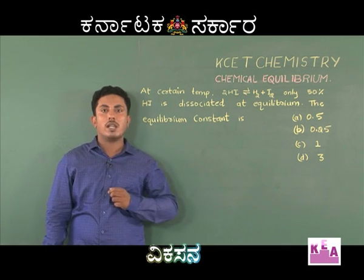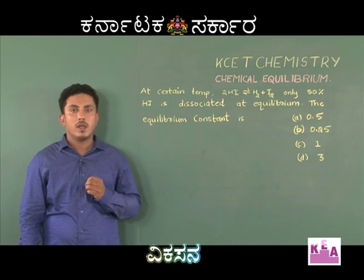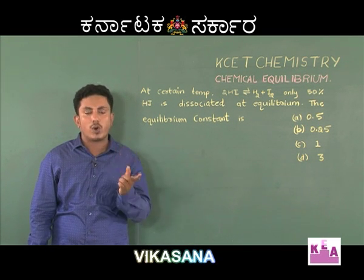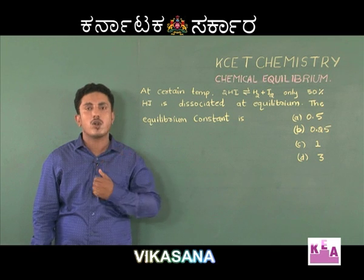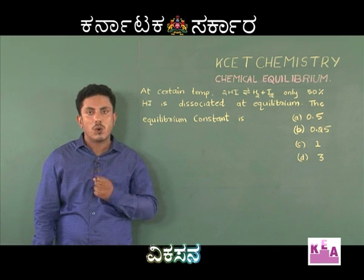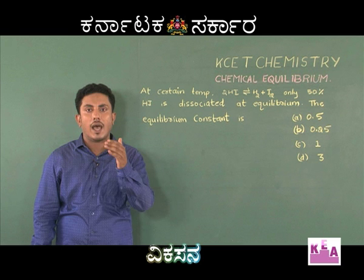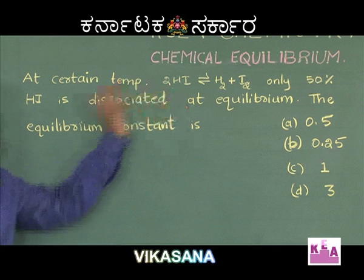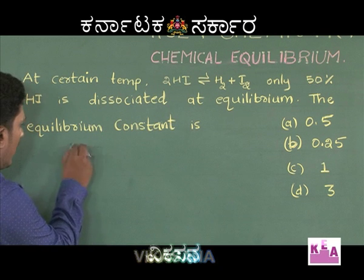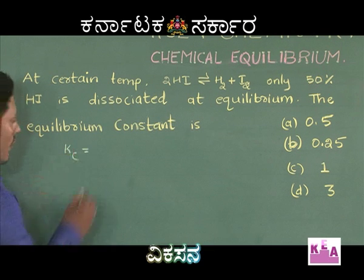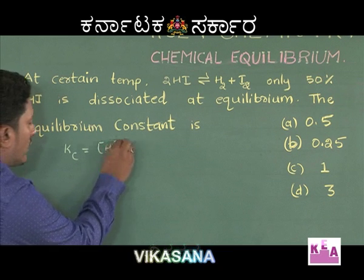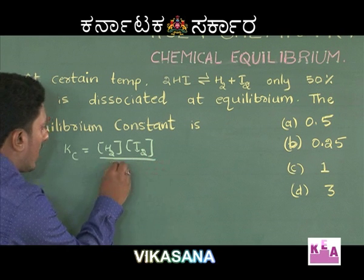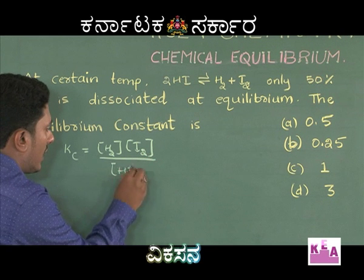Before solving this problem, I will tell you what the equilibrium constant is. The equilibrium constant for a reaction is the ratio of the product of concentrations of the products to the concentrations of the reactants, raised to powers equal to the stoichiometries as per the balanced chemical equation. So, Kc equals concentration of H₂ into concentration of I₂ divided by concentration of HI squared.